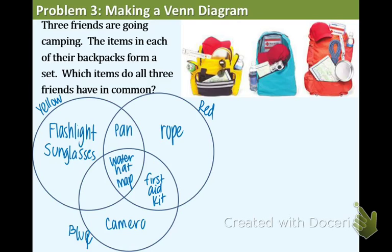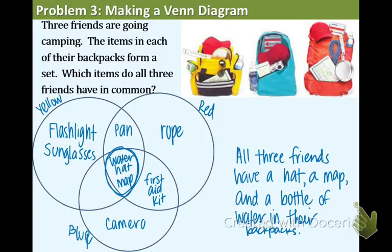And the question was, which items do all three friends have in common? What you do is you look at the very center of your diagram, and those are the items that all three friends have. So we're going to write a conclusion sentence now. So all three friends have a hat, a map, and a bottle of water in their backpacks. That concludes this lesson.